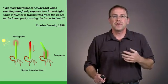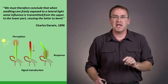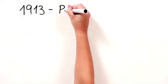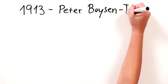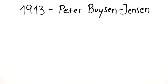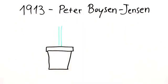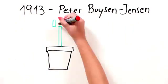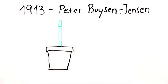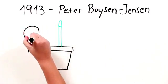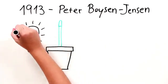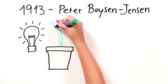Darwin's results were the basis for further experiments at the beginning of the 20th century by the Dutch scientist Peter Boysen-Jensen. What Boysen-Jensen did was he cut off the tip of the seedling and then put it back on the plant. When he cut off the tip and put it back on, the plant still had the ability to bend towards the light.